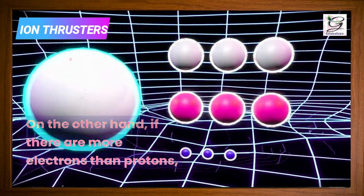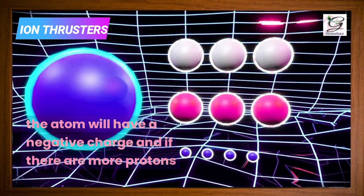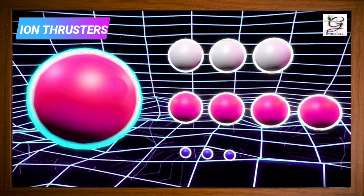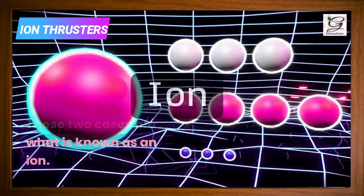On the other hand, if there are more electrons than protons, the atom will have a negative charge, and if there are more protons than electrons, the atom will have a positive charge. These two cases are what is known as an ion.